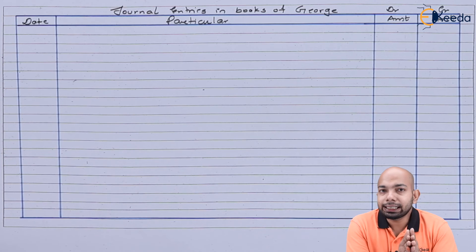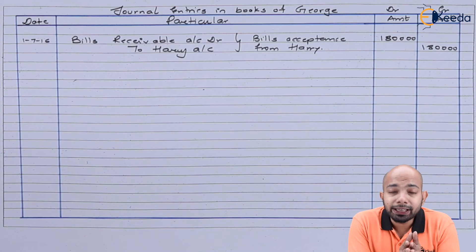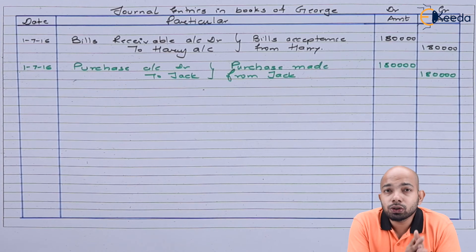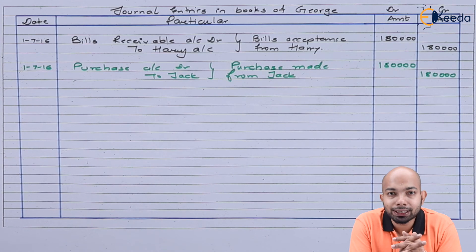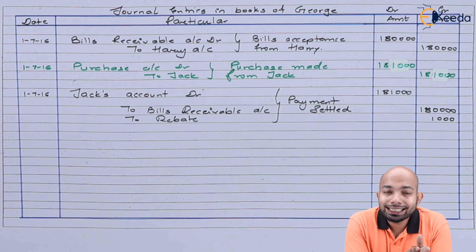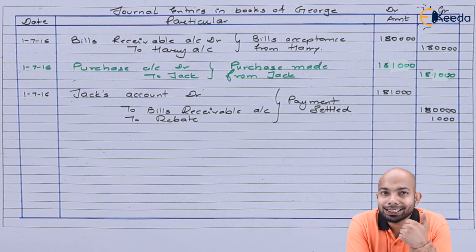The first entry in George's books is the bill received as acceptance from Harry. On the same day, George purchased goods from Jack; the payment was made by endorsing the bill of exchange received from Harry. Jack was due 1 lakh 81,000, but a discount or rebate of 1,000 was provided, so the bill of 1 lakh 80,000 settled it in full.